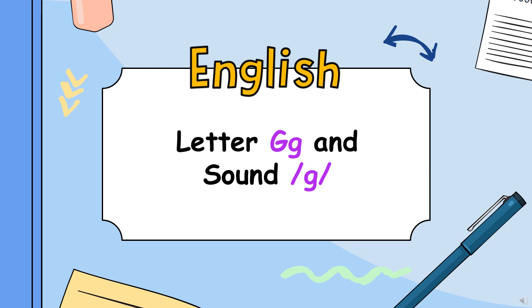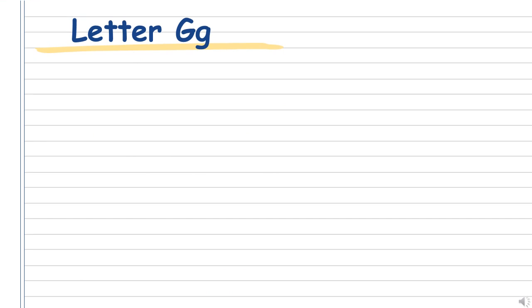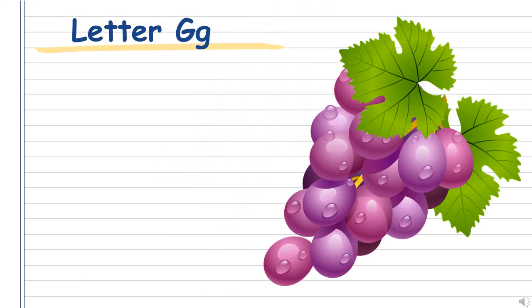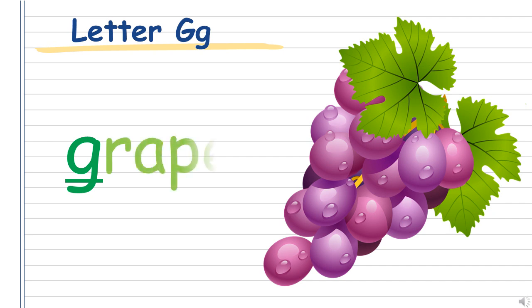Okay, so I have prepared a few examples to show you. The first one is grapes. G. Grapes. Say the word with me. G. Grapes. Good job!